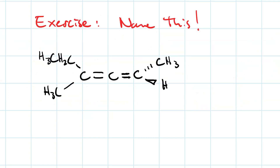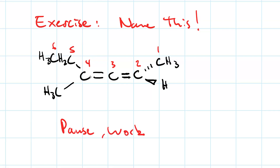Here's an exercise for you to try. I'll give you a hint: number from right to left to give the pi bonds the lowest possible locants. Then you'll see that the parent chain is 2,3-hexadiene. You just have to get the substituents and the stereochemistry right. Pause your video, work the problem, then resume to see the answer.